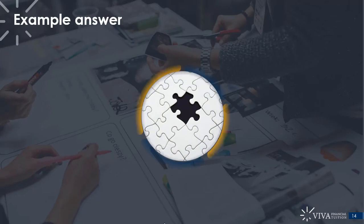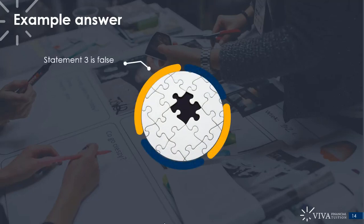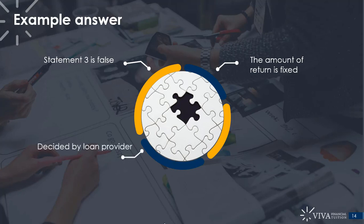Statement three is false. The amount of return is fixed — it is not fixed by the directors of the company receiving the cash; it's fixed by the loan provider. Therefore the first two statements are true. The loan can be secured, though it doesn't necessarily have to be. The return is going to be fixed, but it is not the directors of the company receiving the finance who determine what the return is going to be.